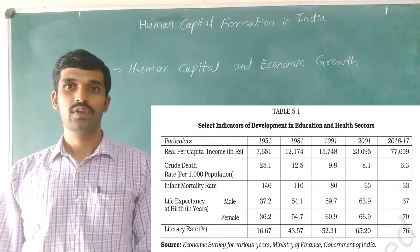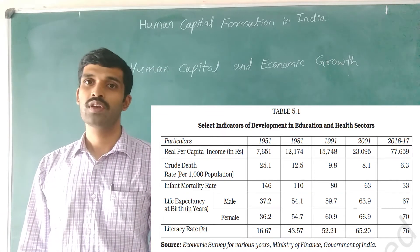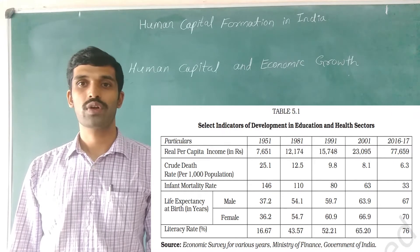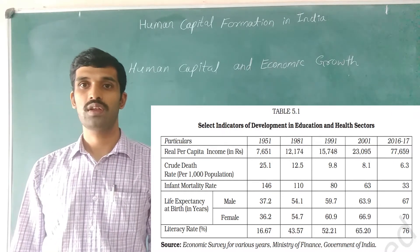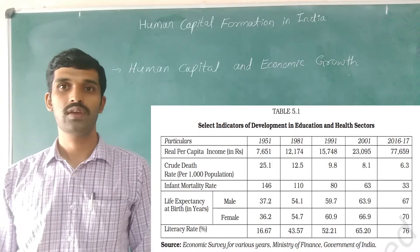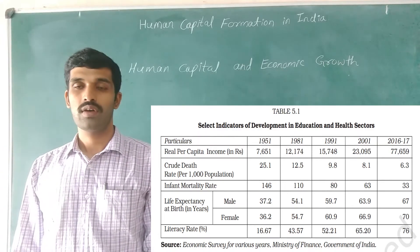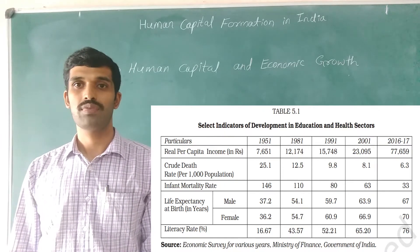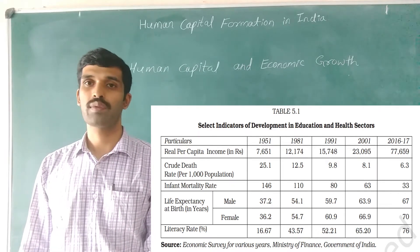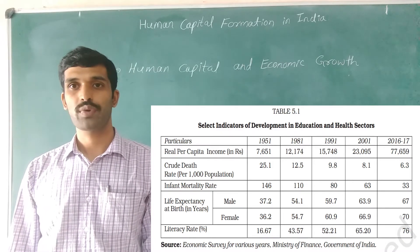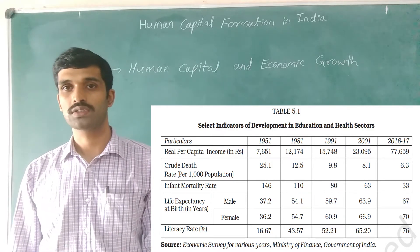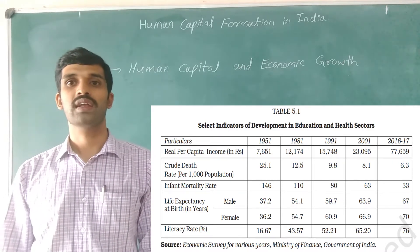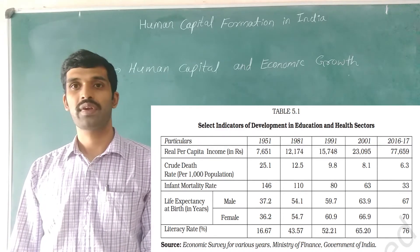The crude death rate also changed significantly from 1951 to 2016-17. Infant mortality rate fell from about 146 in 1951 to about 33 per thousand in 2016-17. Life expectancy for males increased from 37.2 years in 1951 to 67 years in 2016-17, and female life expectancy rose from 36.2 years to 70 years. Literacy rate improved from about 16.67% in 1950-51 to about 76% in 2016-17.